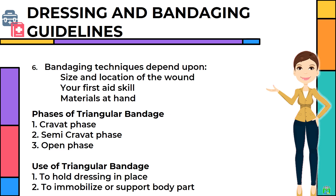Phases of triangular bandage: 1. Cravat phase; 2. Semi-cravat phase; 3. Open phase. Uses of triangular bandage: 1. To hold dressing in place; 2. To immobilize or support a body part.